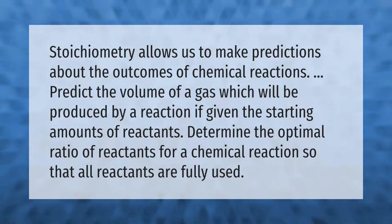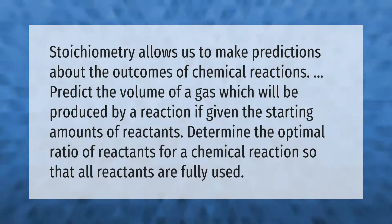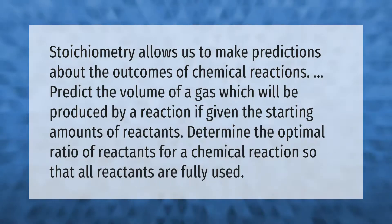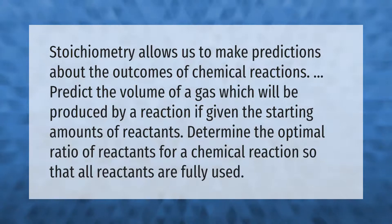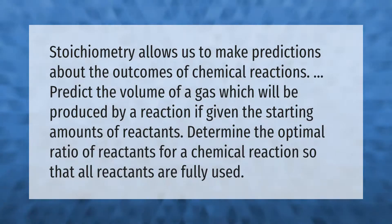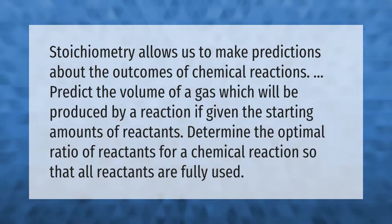Stoichiometry allows us to make predictions about the outcomes of chemical reactions — for example, to predict the volume of a gas which will be produced by a reaction if given the starting amounts of reactants, and to determine the optimal ratio of reactants for a chemical reaction so that all reactants are fully used.